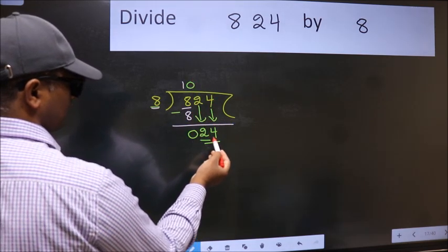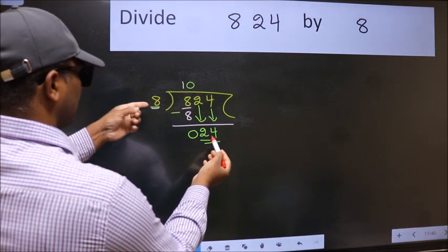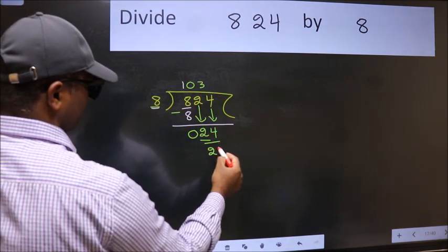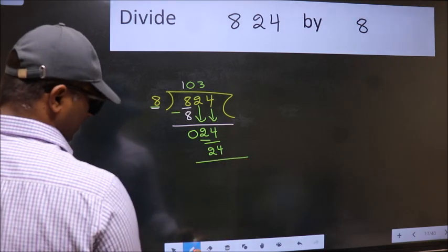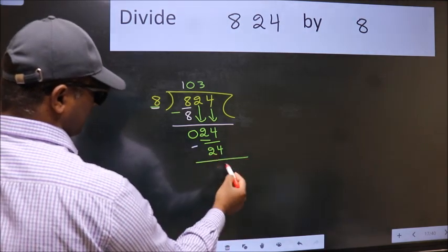So, 24. When do we get 24 in the 8 table? 8 threes, 24. Now we subtract. We get 0.